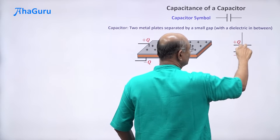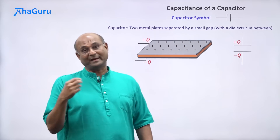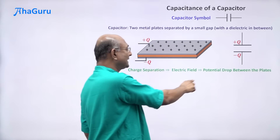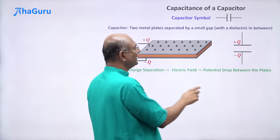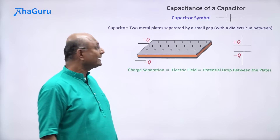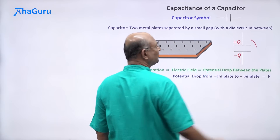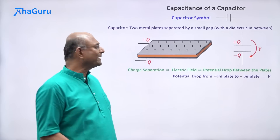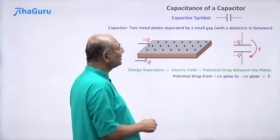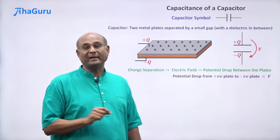There will be field lines from the positive charge to the negative charge. Where there is electric field, there will be a potential drop. Because there is charge separation, there is electric field, and because there is electric field, there is a potential drop between the plates. Let us say that the potential drop between the positive plate and the negative plate is V. The question is: is this V related to Q? Yes, it must be related to Q.